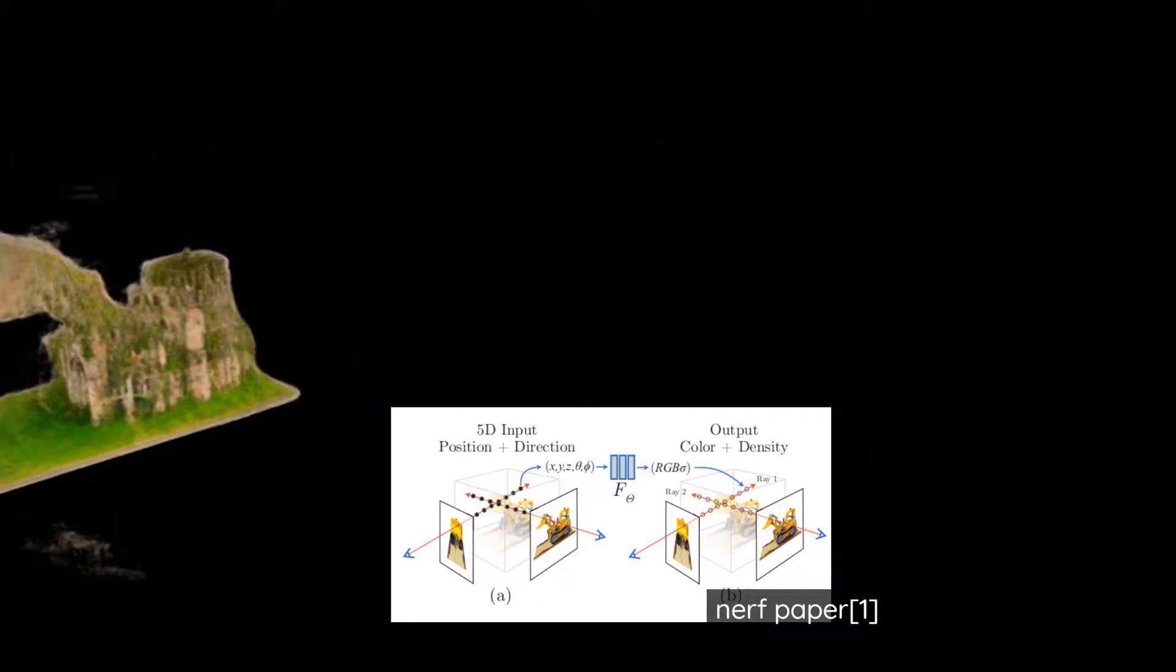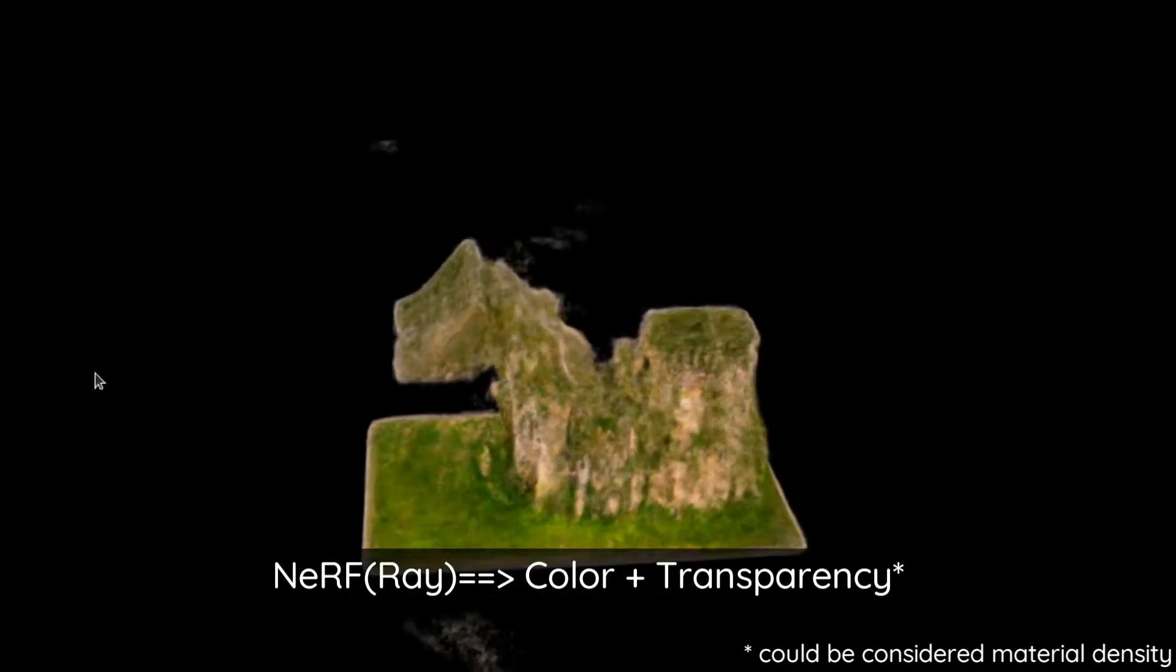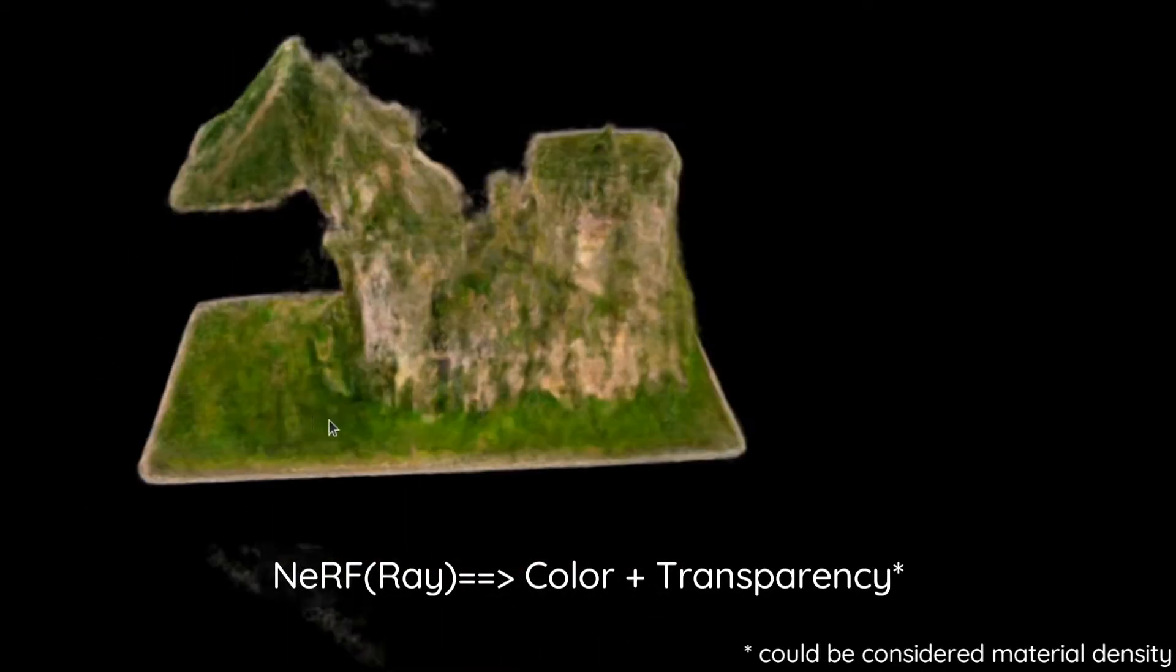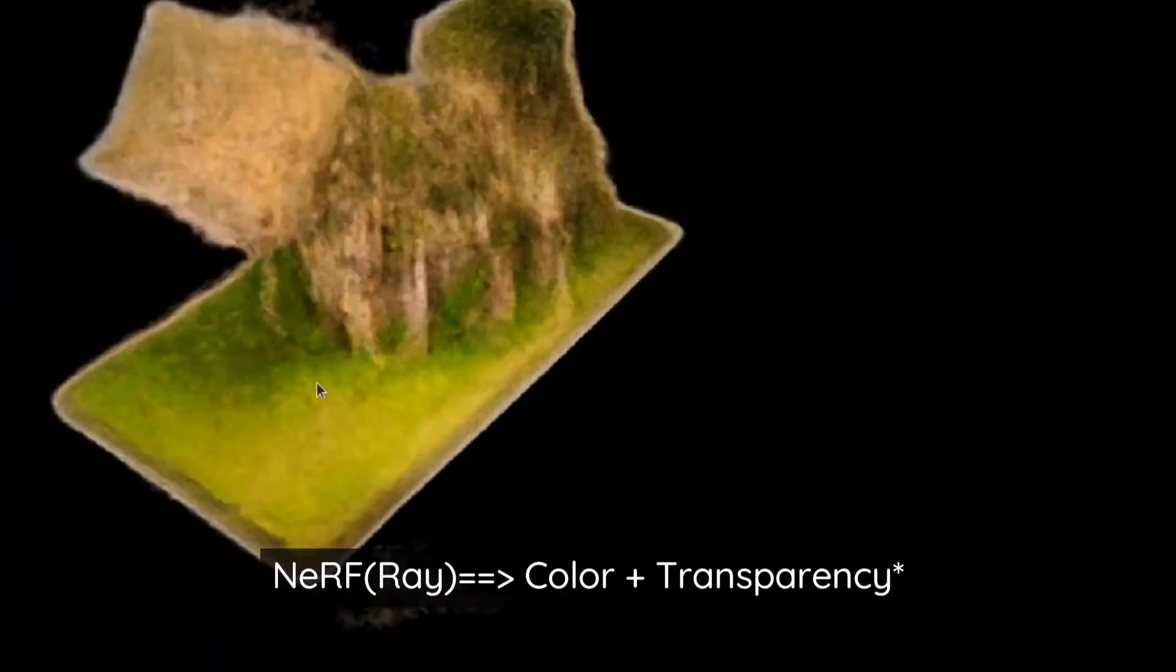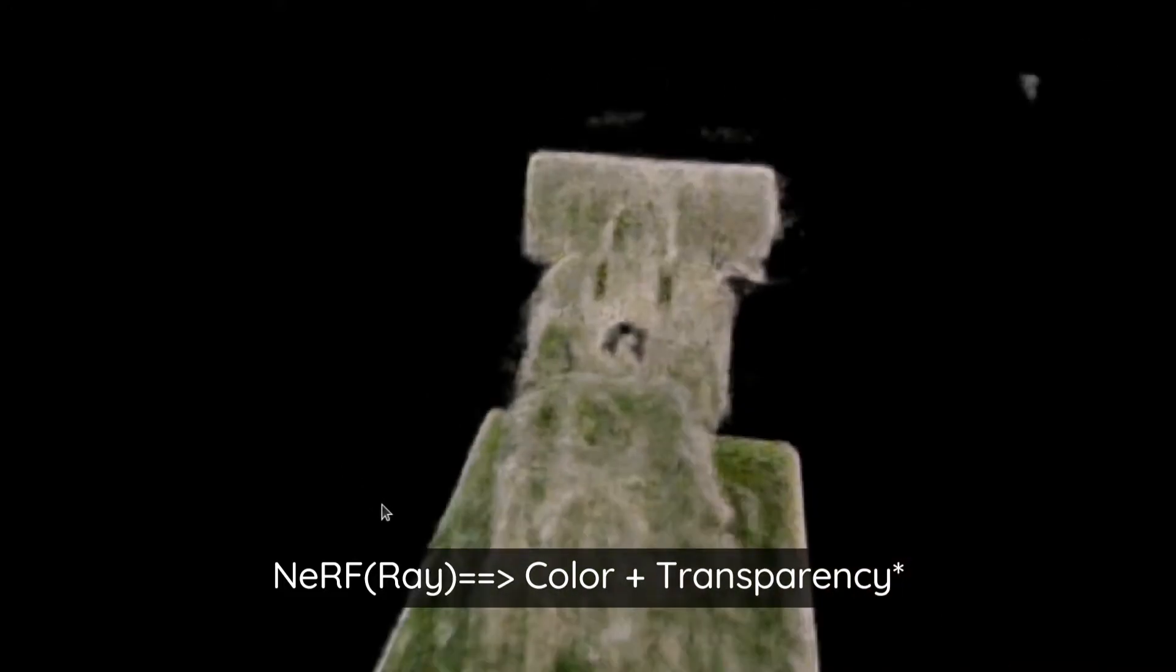This allows you to do ray marching. So you can march these rays from a camera through your scene, and at each point you can query the network and you can get a color and a transparency value. And then you can stack those colors on top of each other and get back an image of what should have been seen from the camera.